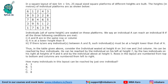Hello everyone, welcome to Aptitude Jab. This set from CAT 2017 Slot 1 DILR is about a matrix. It says that in a square layout of size 5 by 5, 25 equal-sized square platforms of different heights are built. The heights in meters of these platforms are shown in the matrix.